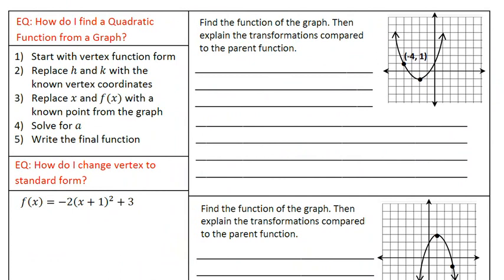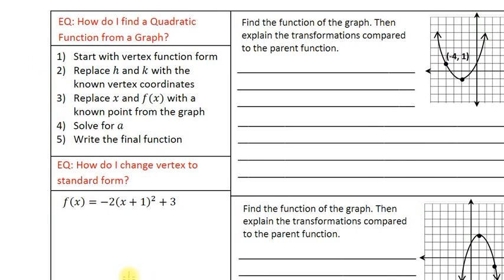The essential question in this video is: how do I find a quadratic function from a graph? Here are your steps: step one, start with vertex function form; step two, replace h and k with the known vertex coordinates; step three, replace x and f(x) with a known point from the graph; step four, solve for a; and step five, write the final function.